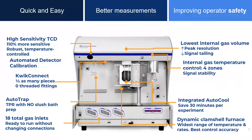Connecting sample tubes with the new quick connect retention system is faster, easier, and more efficient than systems that use threaded parts. The AutoTrap ensures users will never have to make another slush bath, saving hours per day. The number of gas inlets is increased to 18 to reduce or remove the necessity to change out gases. The AutoChem 3 has the lowest internal gas volume of any instrument of this type, increasing peak resolution and decreasing signal tailing.